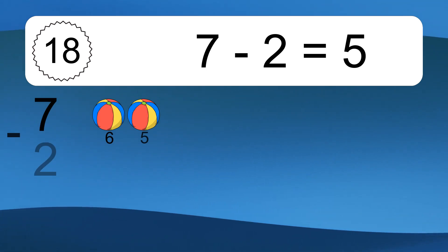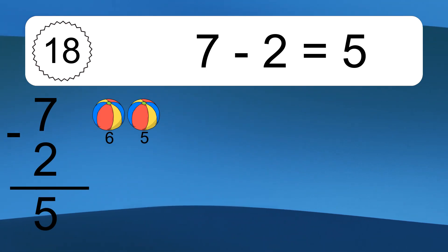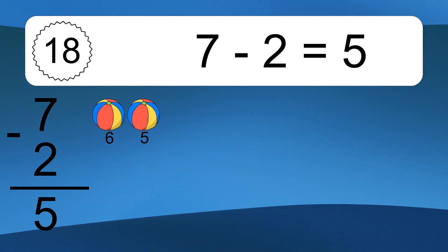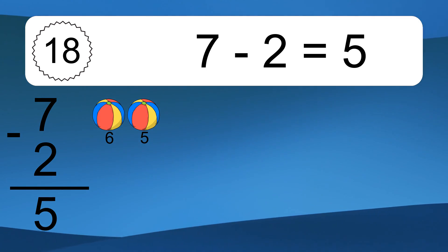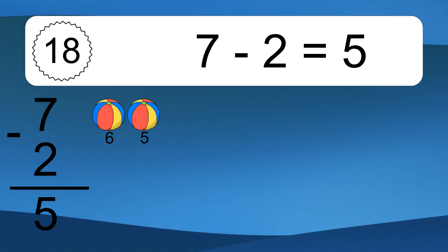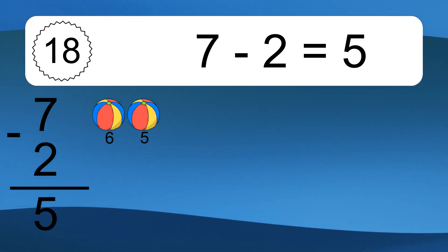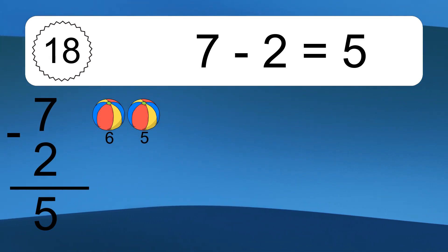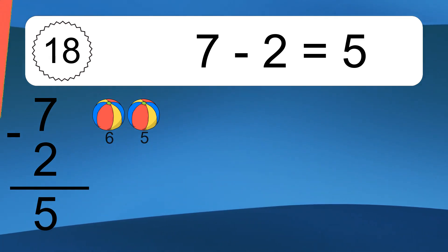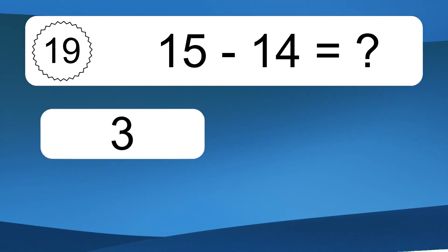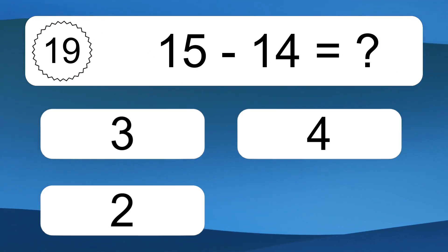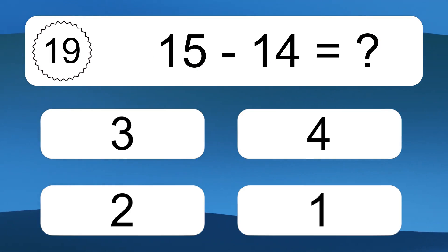7 minus 2 equals what? 7 minus 2 equals 5. Let's count it. 6, 5.